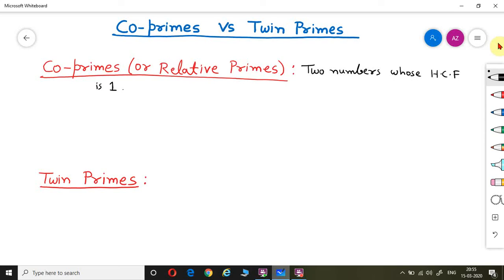If we take some examples of co-primes, suppose 2 and 3. So 2 and 3 are co-primes as the HCF between these two is 1. These two numbers have no common factors other than 1.